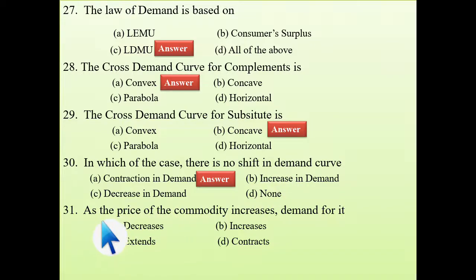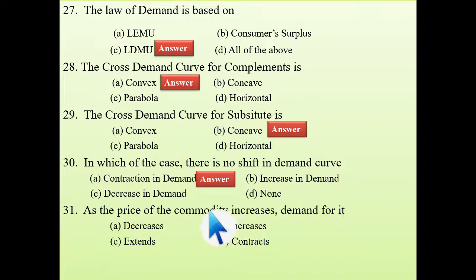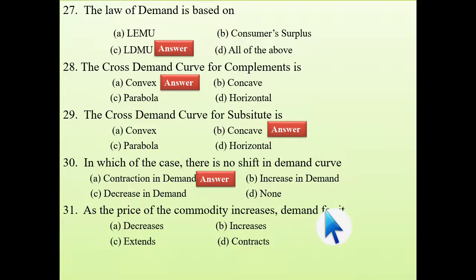Next: as the price of a commodity increases, demand for it — when price increases, demand decreases, but since price is the factor concerned, it will be contraction, because when price changes there will be movement rather than a shift.